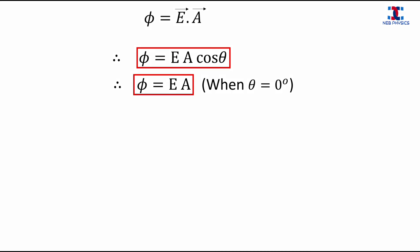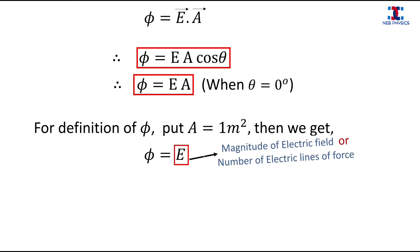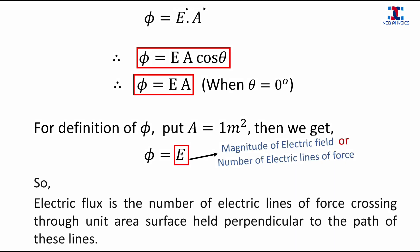Now let's define electric flux. To get the definition of electric flux, let's keep the area of the plane surface 1 meter square. If we keep the area of the plane surface 1 meter square, then we get electric flux phi equal to electric field. So electric flux is the number of electric lines of force crossing through a unit area surface held perpendicular to the path of these lines.